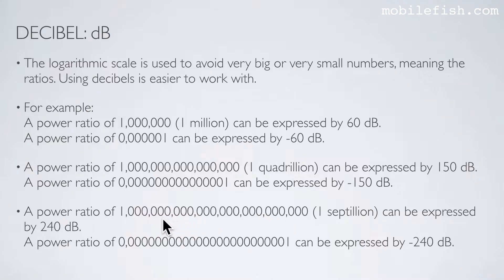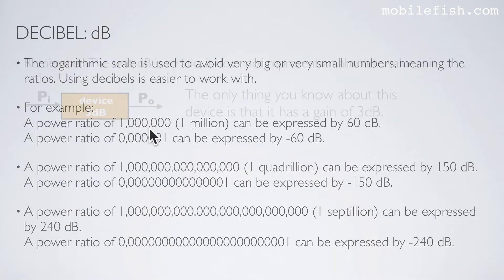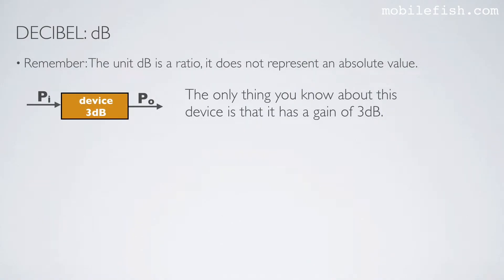As you can see, instead of writing a large number, you can write a small number — it is easier to work with. Please note: dB is a ratio, not an absolute value. For example, let's say my salary is twice a teacher's salary. You only know that my salary is twice a teacher's salary, but you don't know my actual salary. That is what a ratio means. In this example, 60 dB means 1 million, but you don't know what the absolute power is. The unit dB does not represent an absolute value.